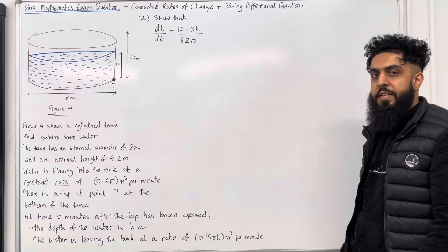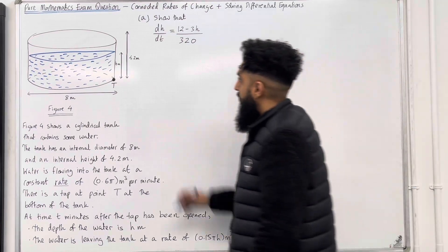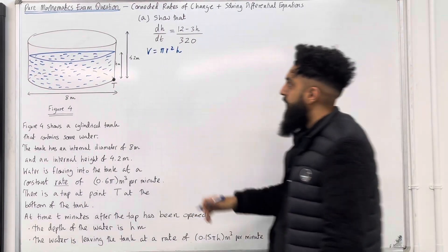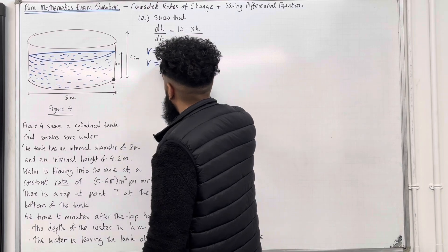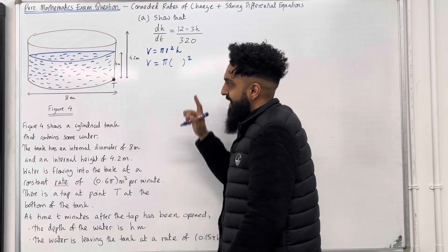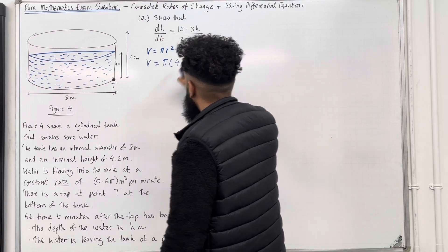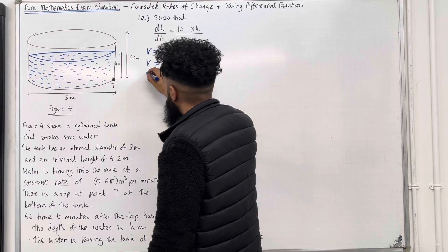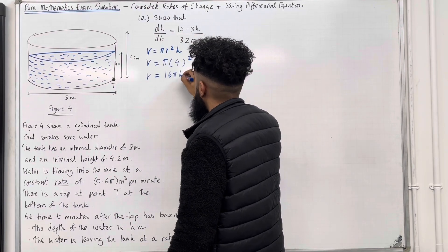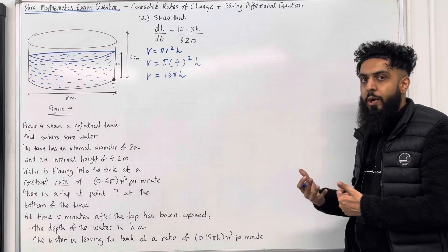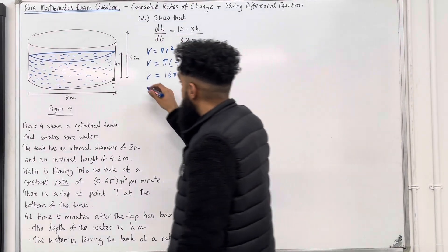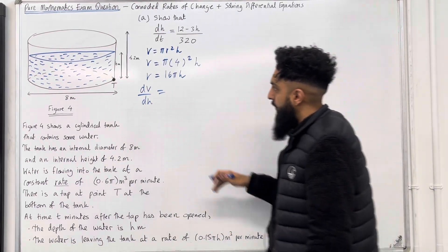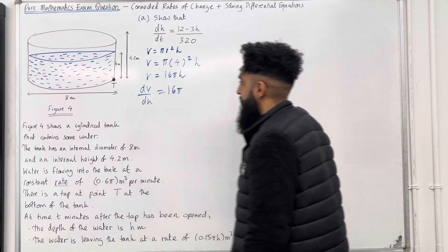I'm going to start by calculating the volume of water in the tank. The volume V of a cylinder is given by πr²h. The volume of water V in the tank is given by π times the radius squared. The diameter is 8, so 8 divided by 2 gives a radius of 4. We square that and multiply by the depth h, giving V = 16πh. I've got V in terms of h, so I can generate my first differential: dV/dh = 16π.